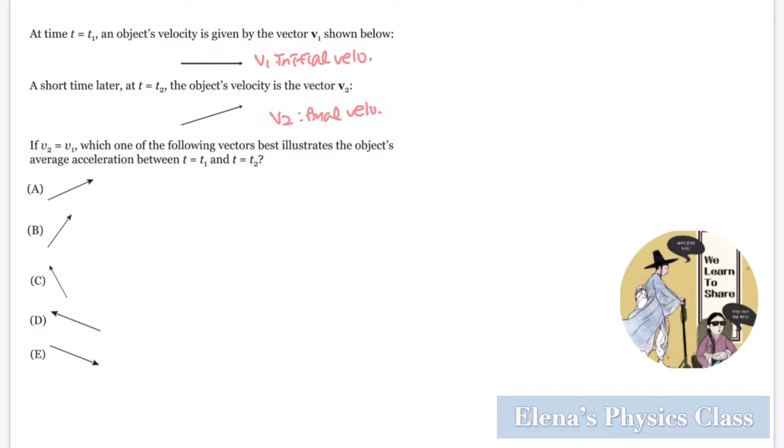And as you know, acceleration is a vector and it is the rate of change of velocity. So that would be delta v over delta t, which means delta v being v2 minus v1, or the change of velocity. And you're going to divide that by delta t so that you can get the rate of change of velocity.